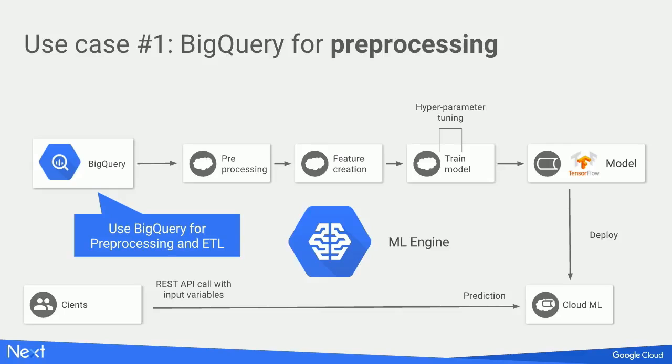You can use BigQuery as a data lake, so you can gather all the data coming from the enterprise — like application servers, web servers, databases — or import it to BigQuery and do some pre-processing on that. Then you can export that data as training data to TensorFlow or ML engine.